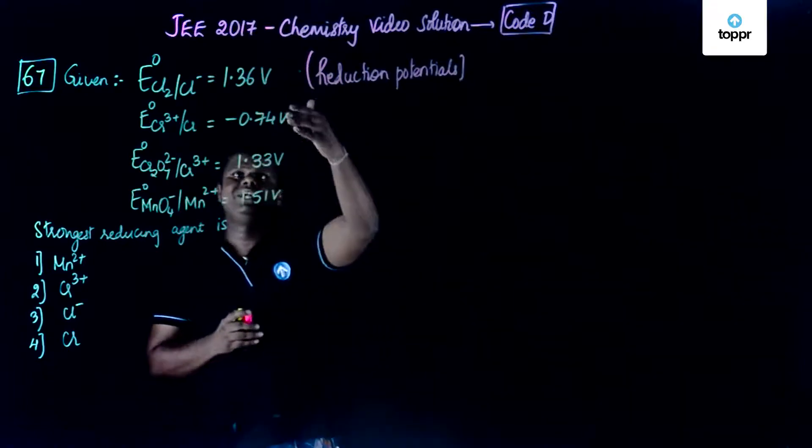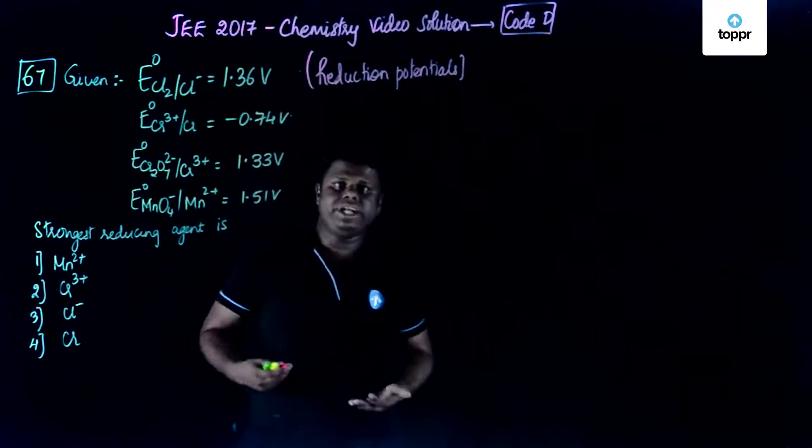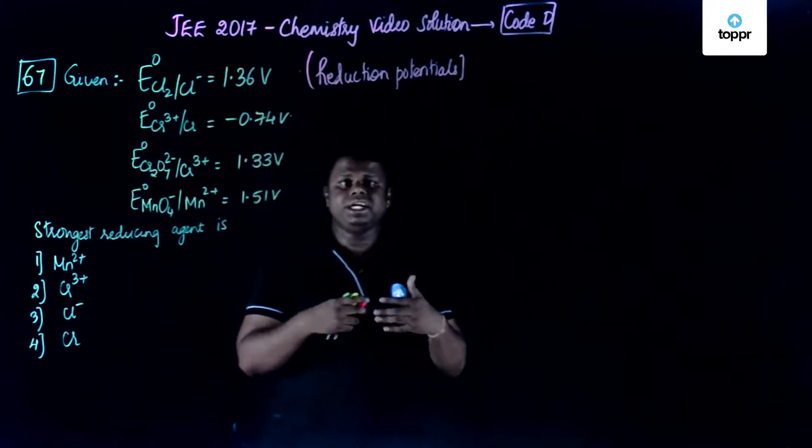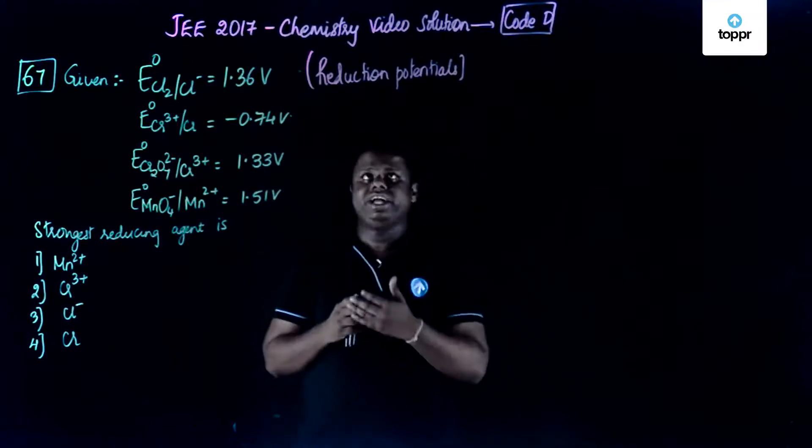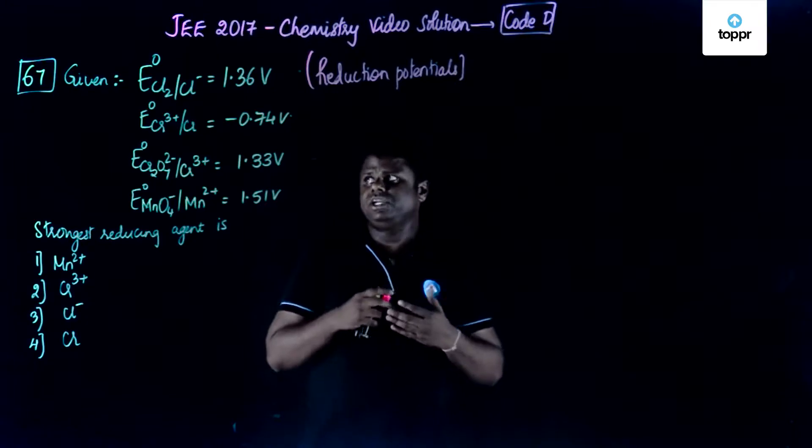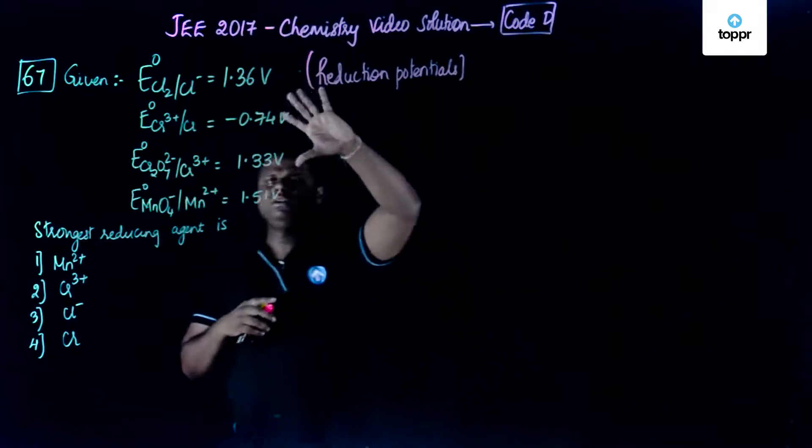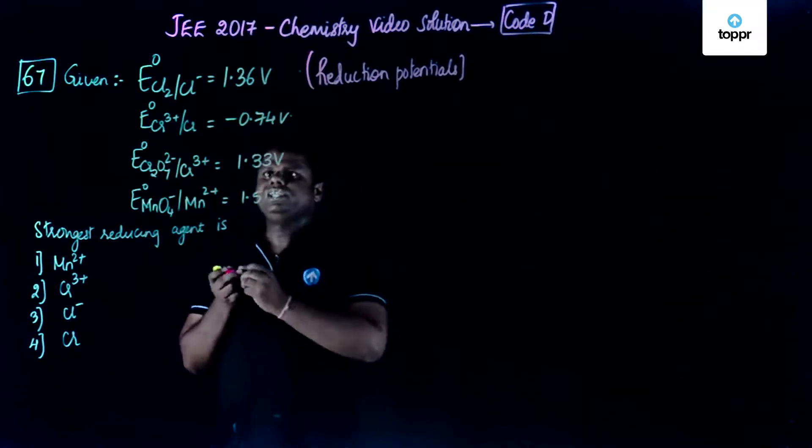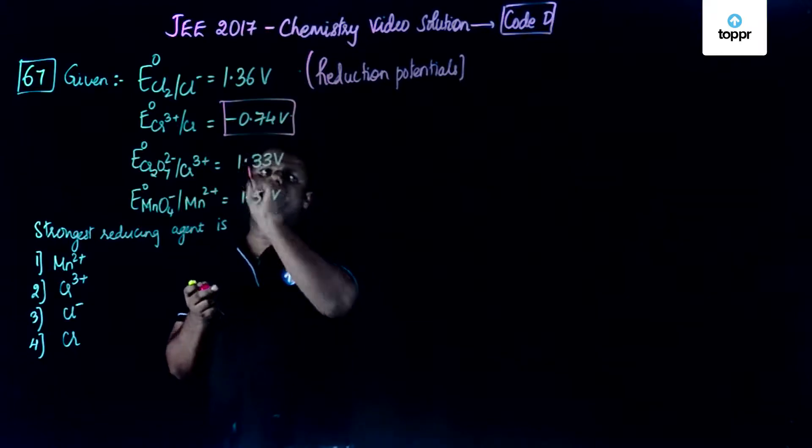So if you could see these are the potential values. Higher the potential, that means higher will be the tendency to undergo reduction. Reduction potential higher means higher will be the tendency to undergo reduction. So if you're able to find out the lowest value, the lowest value is minus 0.74 volt.